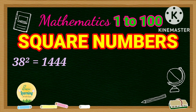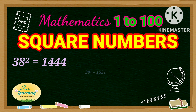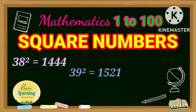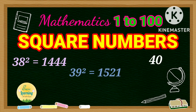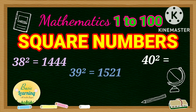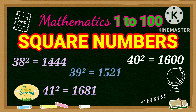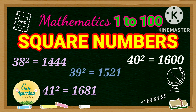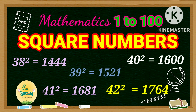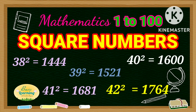Square of 38 is 1,444. Square of 39 is 1,521. Square of 40 is 1,600. Square of 41 is 1,681. Square of 42 is 1,764.